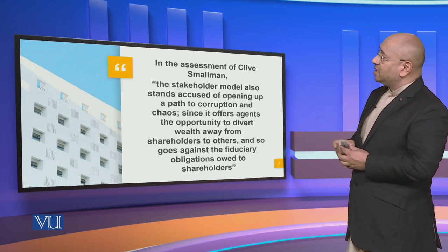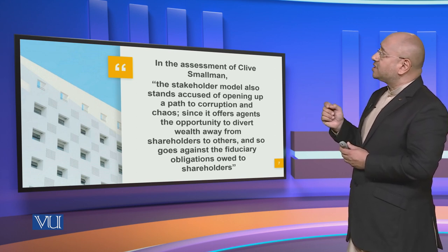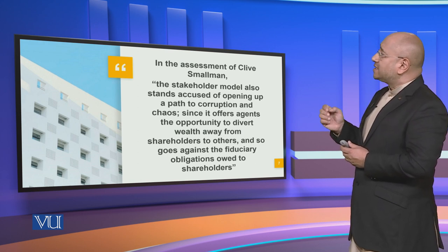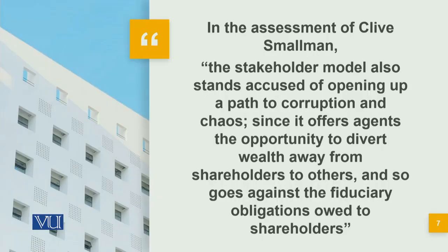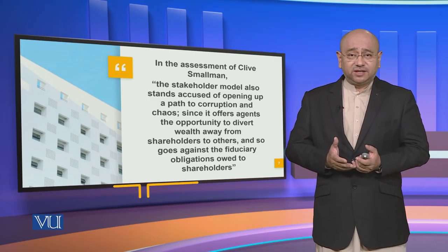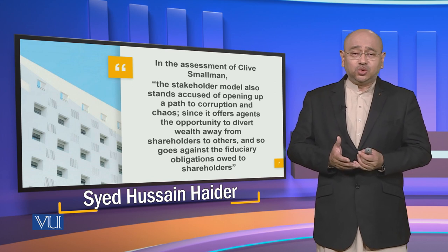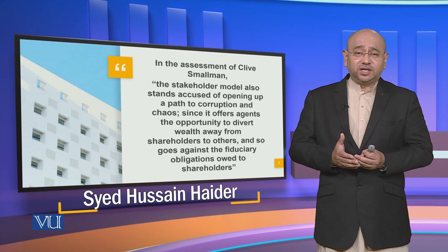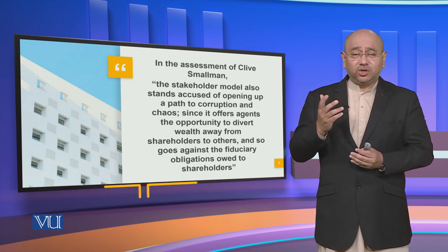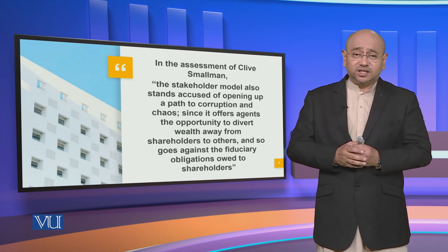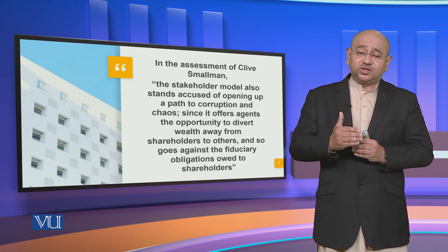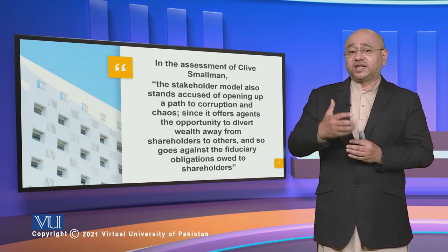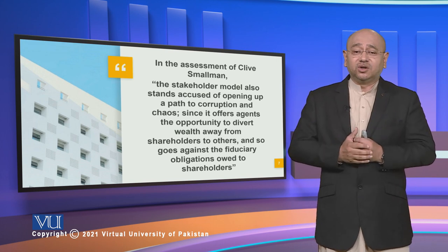Furthermore, in the assessment of Clive Smallman, the stakeholder model also stands accused of opening up a path to corruption and chaos, since it offers agents the opportunity to divert wealth away from shareholders to others, and so goes against the fiduciary obligations owed to shareholders. What we are seeing is that this theory tends to instigate and promote corruption, because it is inclined towards the shareholder without taking into consideration the other stakeholders from a contextual perspective, and what it tends to propagate is that wealth is taken away, violating the fiduciary obligations owed to the shareholder.